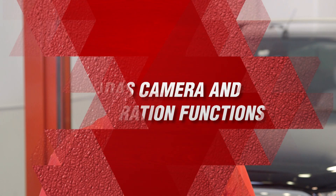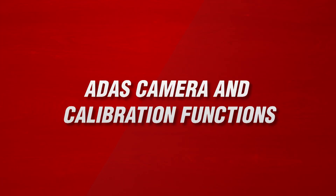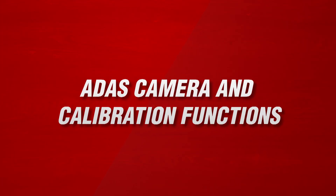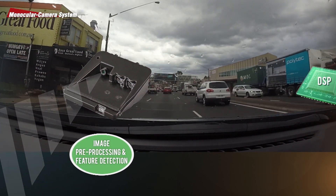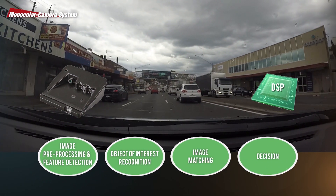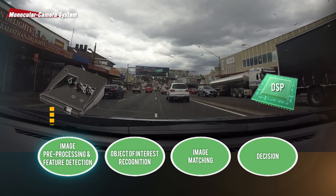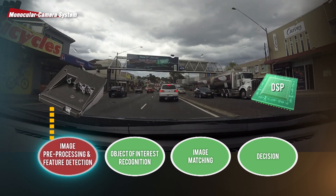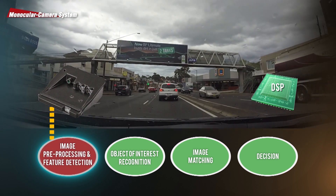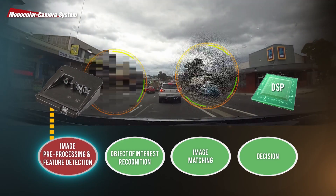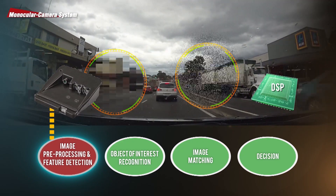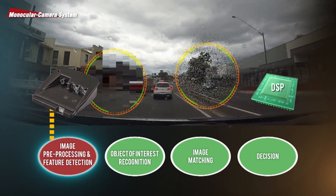Here's a short teaser of what this module will cover. The camera system uses several steps to identify a captured image, with the first being to process the video feed. Various filters are run on a captured video frame to remove noise and other unneeded information.